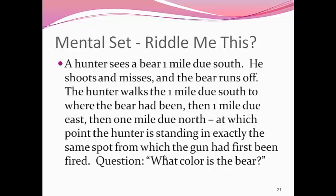Let's try one more riddle. How about this one? A hunter sees a bear one mile due south with a very powerful rifle and scope. He shoots and misses. The bear runs off. So the hunter walks one mile due south to where the bear had been standing, sees the footprints and everything. Then one mile due east, then the hunter turns and walks one mile due north, at which point the hunter is standing in exactly the same spot from which he fired the gun in the first place and missed. The question is, what color is the bear?